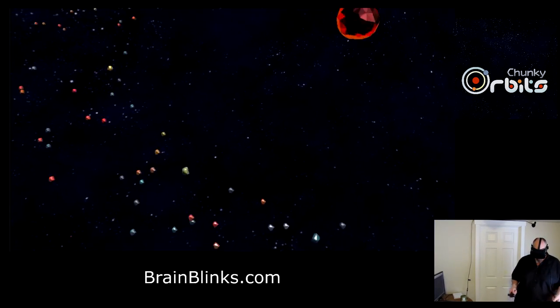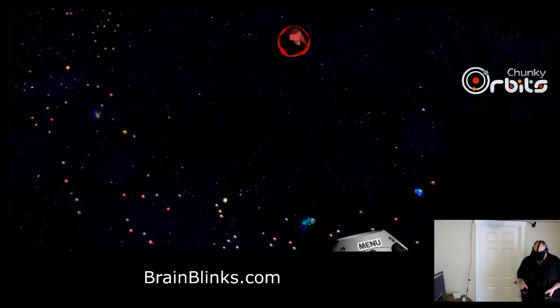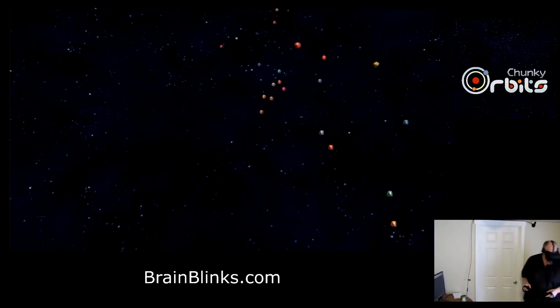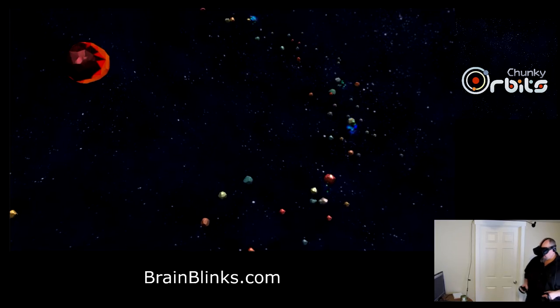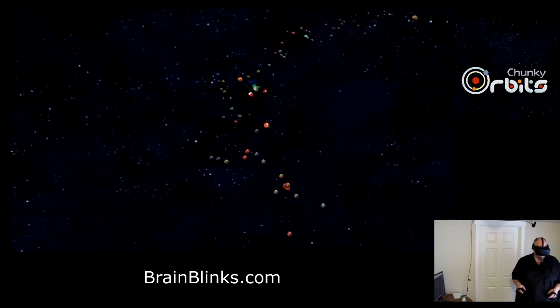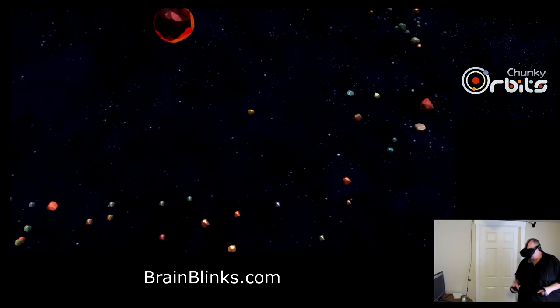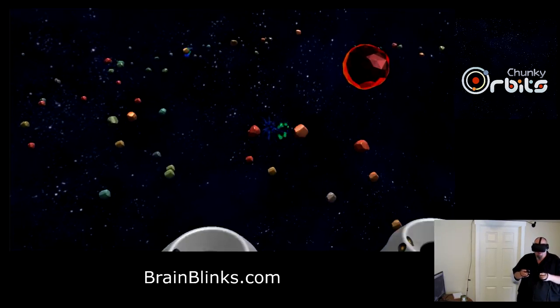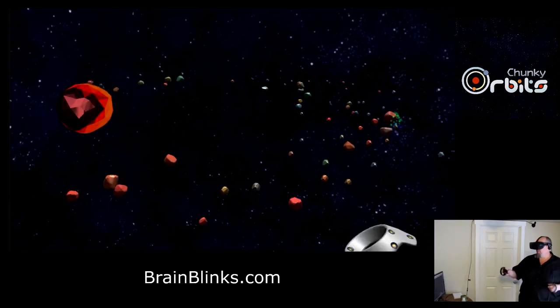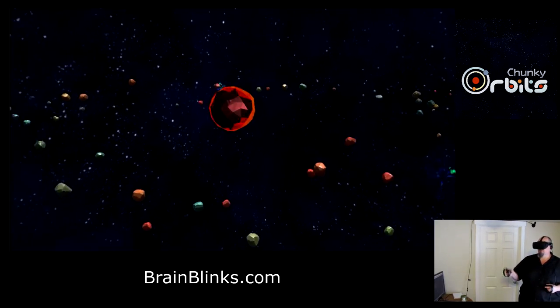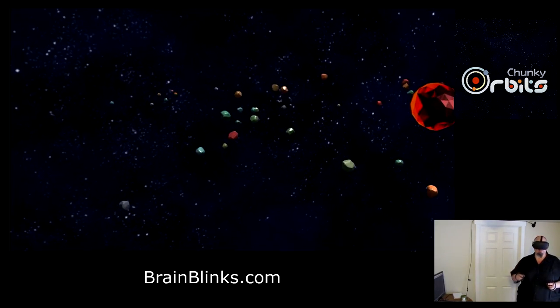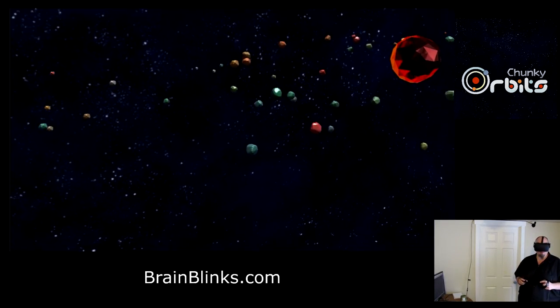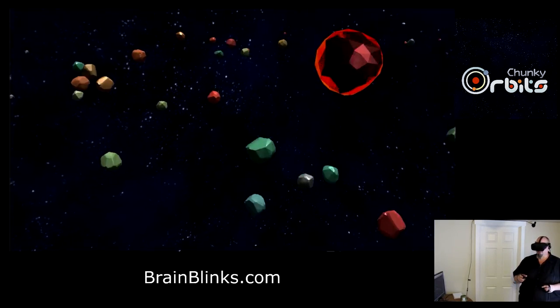It starts off with about 150 of these absorber rocks and they're all kind of orbiting and jockeying for position. And then since they're absorbers, they start absorbing the other rocks and getting bigger and bigger, and you'll end up with just a few larger bodies in kind of erratic orbits.